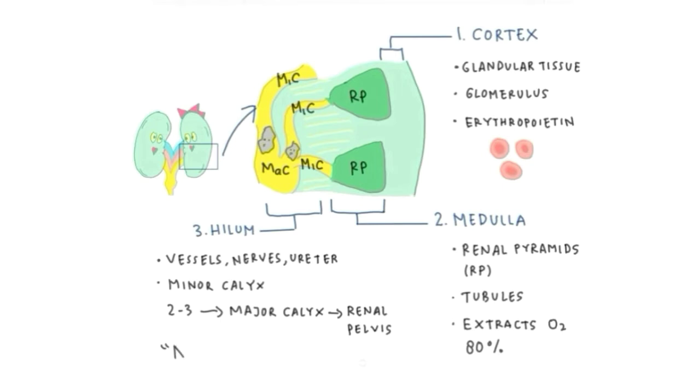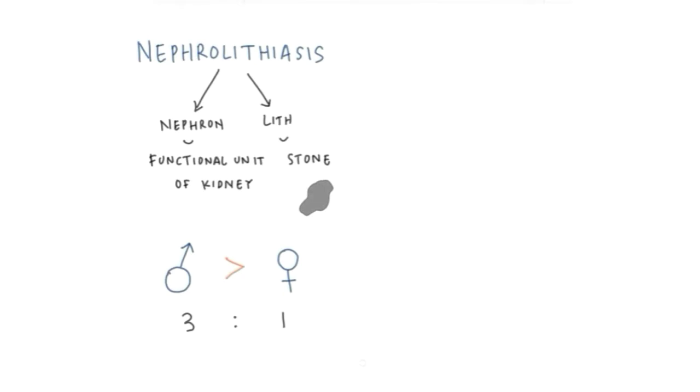Nephrolithiasis consists of two words: nephron and lith. Nephron is functional unit of the kidney. Lith means stone. Kidney stones are slightly more common in males than females, showing a male to female ratio of three to one. Most urinary calculi develop in persons age 40 to 50 years, but the disease can affect anyone at any age.